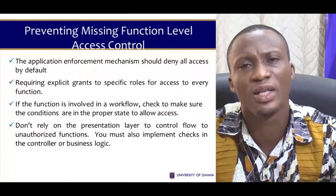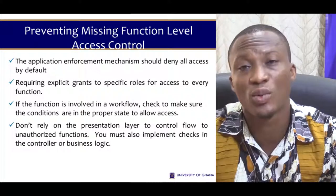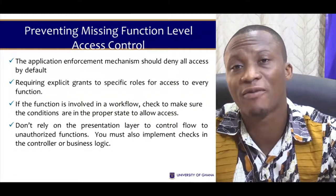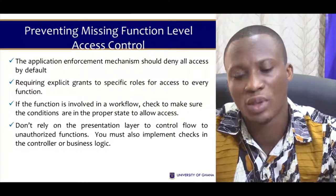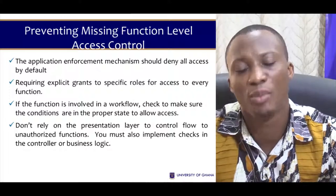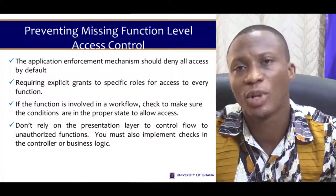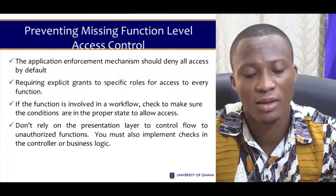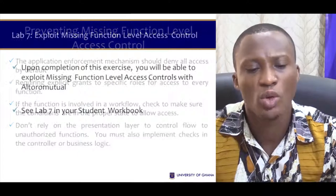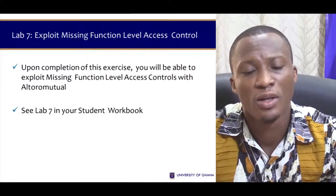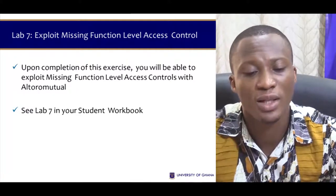How do we prevent missing function level access control? One key thing is the application enforcement mechanism should deny all access by default and require explicit grants to specify rules for access to every function. If a function is involved in a workflow, check that the conditions are in the proper state to allow access. Don't rely on the presentation layer to control flow to authorized functions — you must also implement checks in the controller or business logic, which can be placed in your application server. Once you complete lab 7 in the Sakai platform, you should be able to exploit missing function access level vulnerabilities.